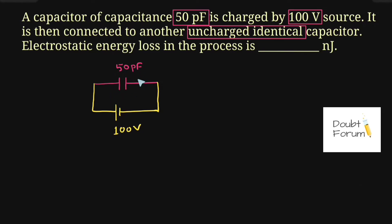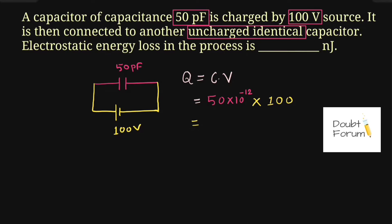When we connect this capacitor across this voltage source, certain amount of charge would be stored inside this capacitor. The basic formula is Q = C × V, where C is the capacitance and V is the voltage applied. The charge stored equals 50 picofarad (pico is 10 to the power minus 12) into 100 volt, which comes out to be 5000 × 10⁻¹² coulomb, or 5 nano coulomb.